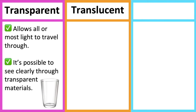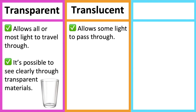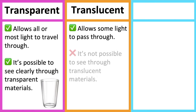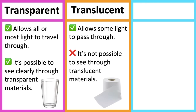Translucent refers to a material that allows some light to pass through. It's not possible to see through translucent materials. For example, tissue paper.